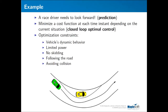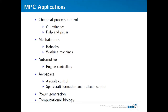At the beginning, MPC controllers were considered computationally expensive, so the first applications were in the chemical industry where the time constant of the system is a few minutes, giving you enough time to run the MPC algorithm and compute the control inputs. Later, with faster hardware and better algorithms, we see applications of MPC everywhere — in mechatronic systems such as robots or washing machines, in the automotive industry for engine controllers, in aerospace for aircraft control, spacecraft formation and attitude control, in the power industry, and more recently in computational biology.